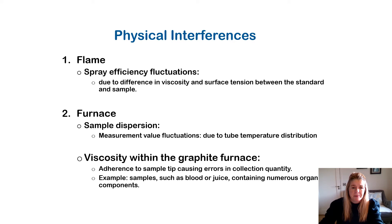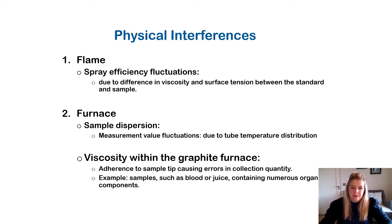For a furnace, it's just that small graphite tube where the sample is inserted. Viscosity is another problem with the graphite furnace. You may have adherence to the sample tip causing errors in collection of quantity, and you might also have different types of viscosity depending on your sample, such as blood or juice containing other organic components.